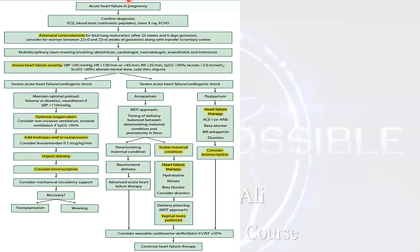This flowchart summarizes management of acute heart failure or shortness of breath at the end of pregnancy or in the postpartum period. Confirm the diagnosis, give antenatal corticosteroids, involve the multidisciplinary team. According to severity and maternal condition, either give heart failure therapy and continue pregnancy to 37 weeks with vaginal delivery, or consider immediate delivery after corticosteroids if the maternal condition is deteriorating.